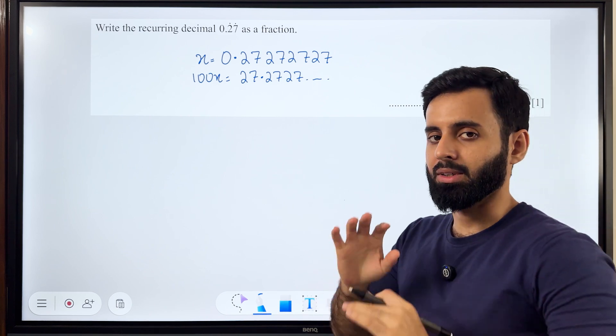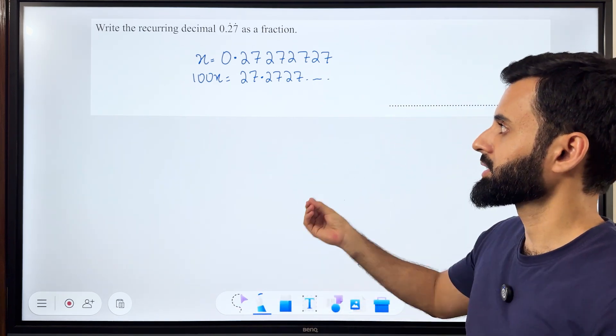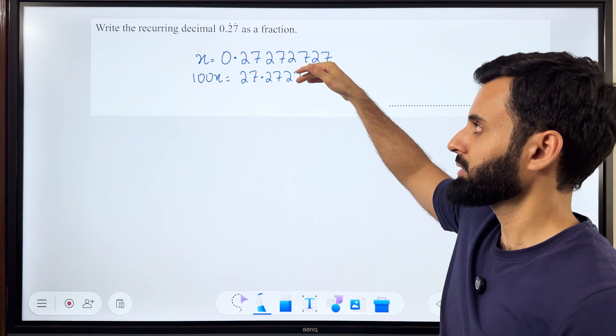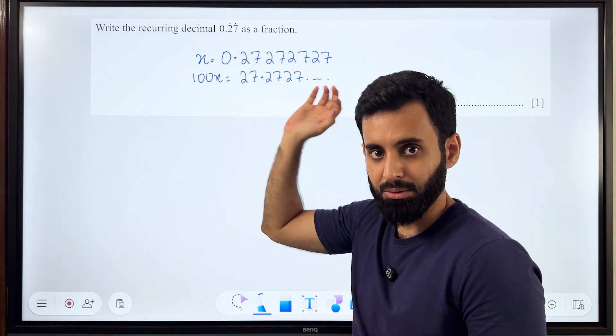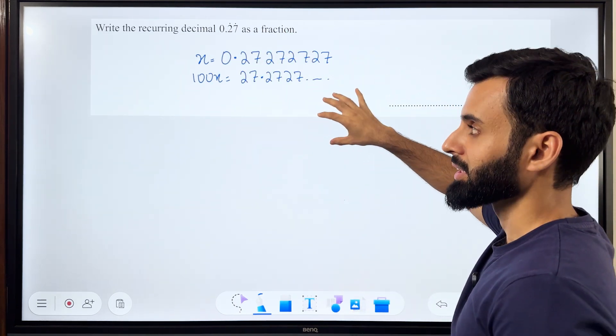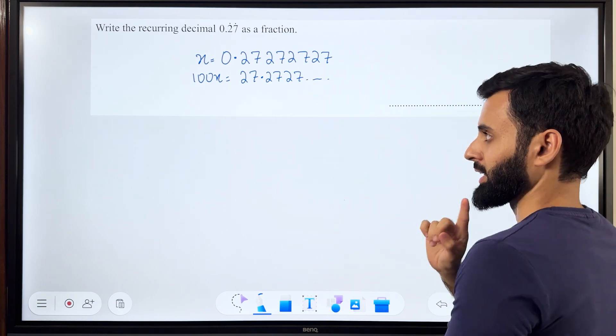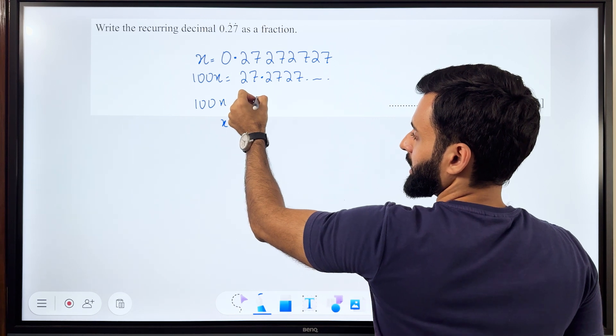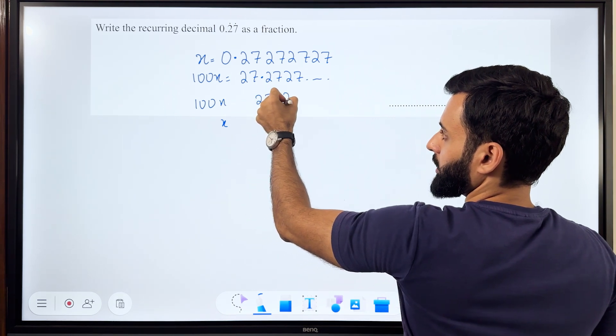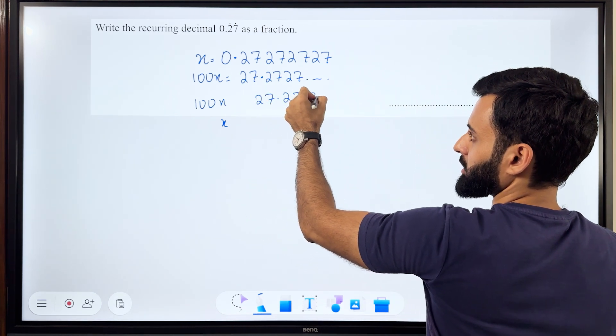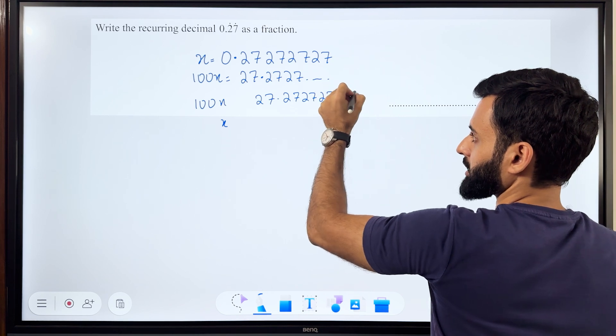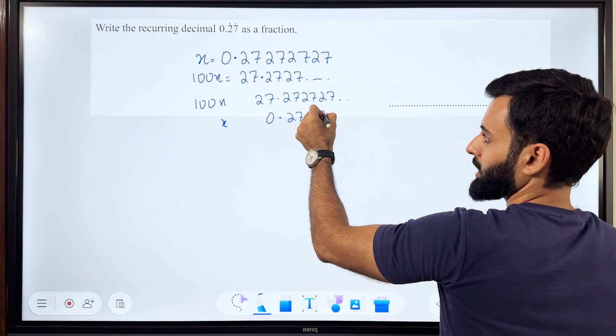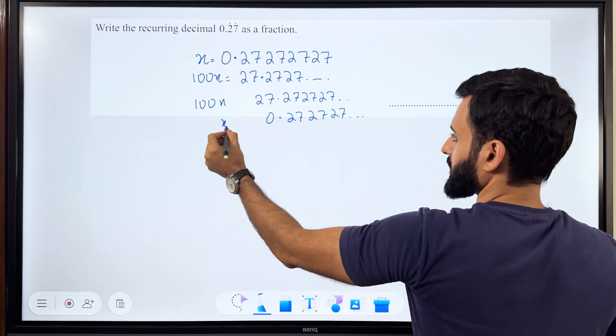Let's stop and think for a second: what will happen if I subtract the two numbers? 27.2727 minus 0.272727 means that the recurring pattern will be eliminated. So that's what I'm going to do. 100x minus x basically means 27.272727, the pattern continues forever, minus x which is 0.272727, the pattern continues forever.